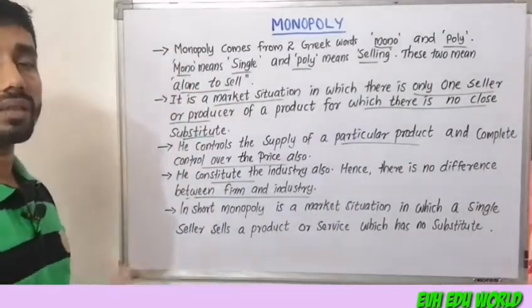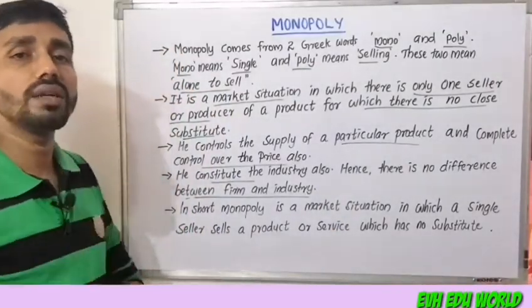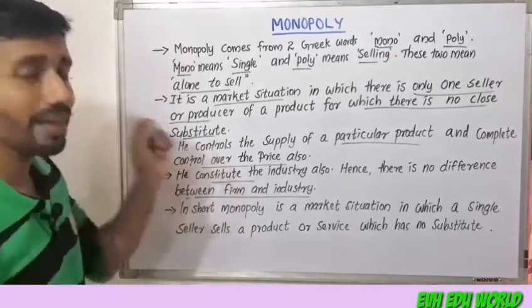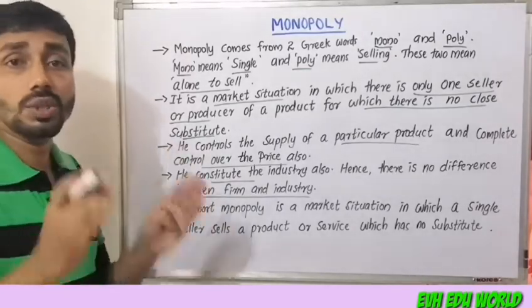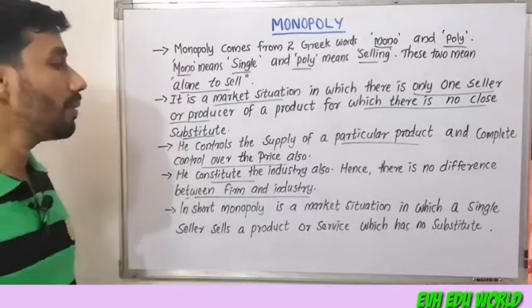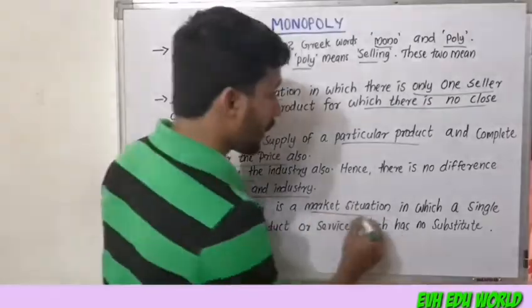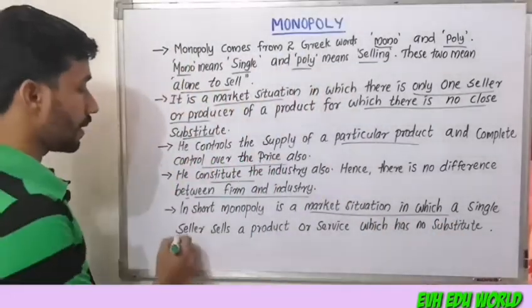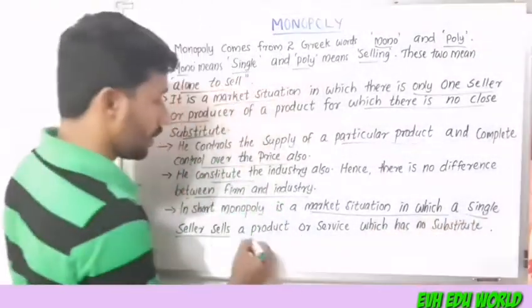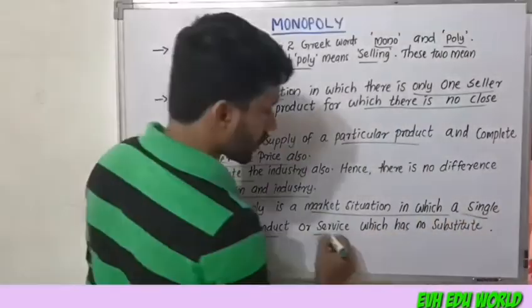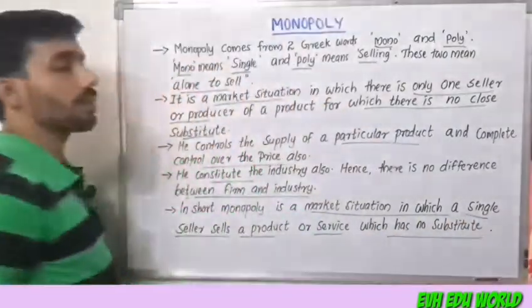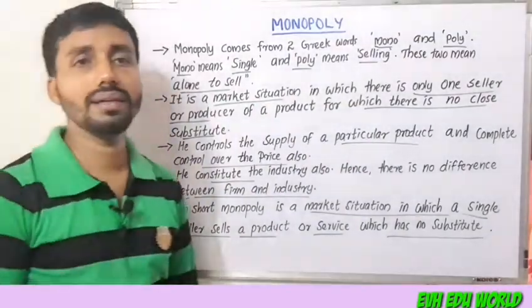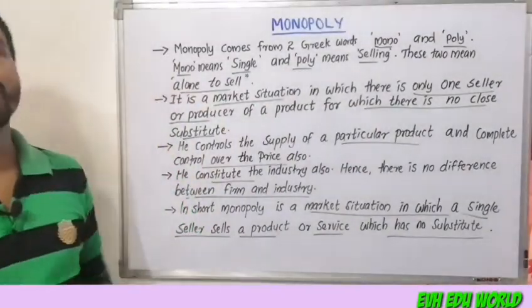There is no difference between firm and industry in a monopoly — the industry is the firm. In short, monopoly means a market situation in which a single seller sells a particular product or service which has no substitute.